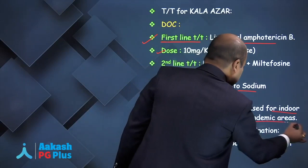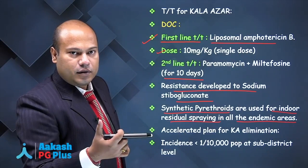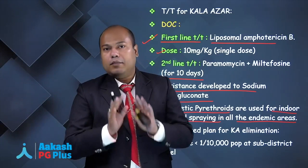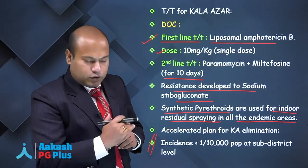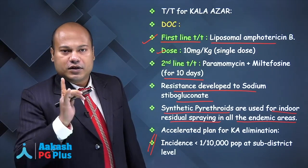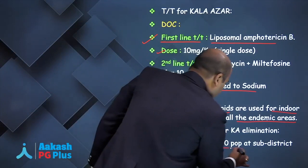The endemic areas are Eastern UP, Bihar, Jharkhand, and West Bengal. The accelerated plan for Kala Azar elimination targets incidence of less than 1 per 10,000 population at the sub-district level. This is a prospective exam question — remember this point.